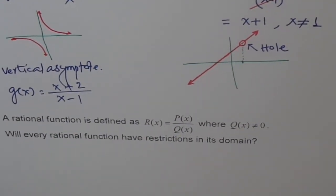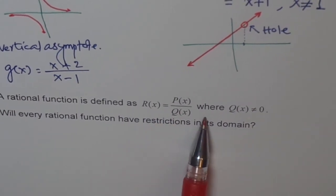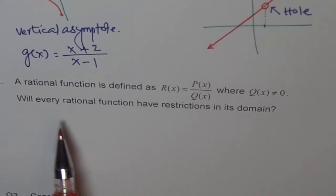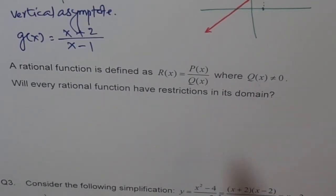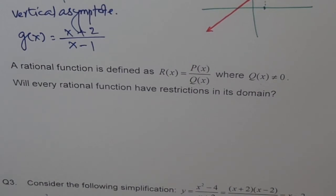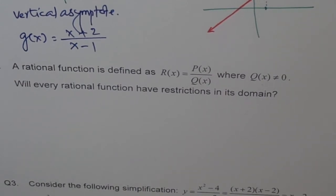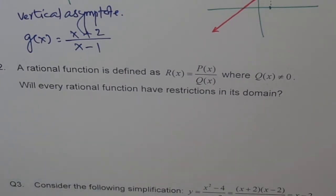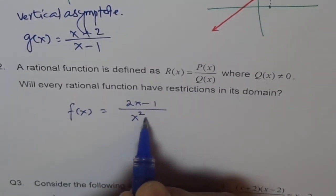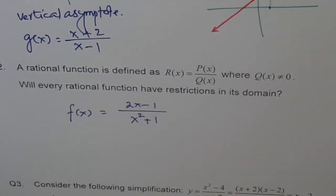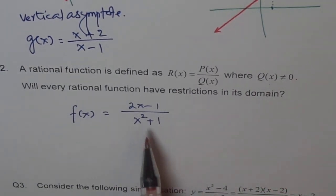Now let's look at the next question. With the definition of a rational function — r(x) = p(x)/q(x), where q(x) ≠ 0 — will every rational function have restrictions in its domain? Is it possible to have rational functions where q(x) can never be zero and therefore never have any restrictions? Consider f(x) = (2x − 1)/(x² + 1). It is a rational function: a polynomial divided by another polynomial.